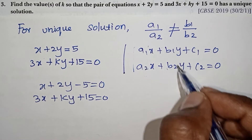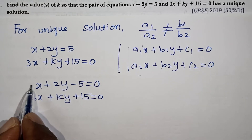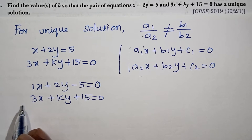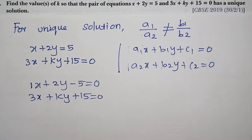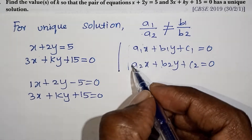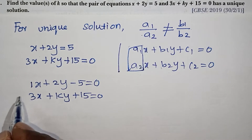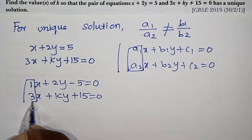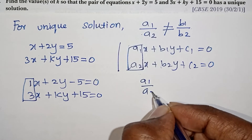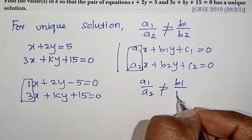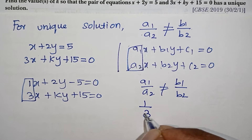The second equation is 3x plus ky plus 15 equal to 0. Here a1 is 1, a2 is 3, b1 is 2, b2 is k. Applying the condition a1 by a2 not equal to b1 by b2, we get 1 by 3 not equal to 2 by k.